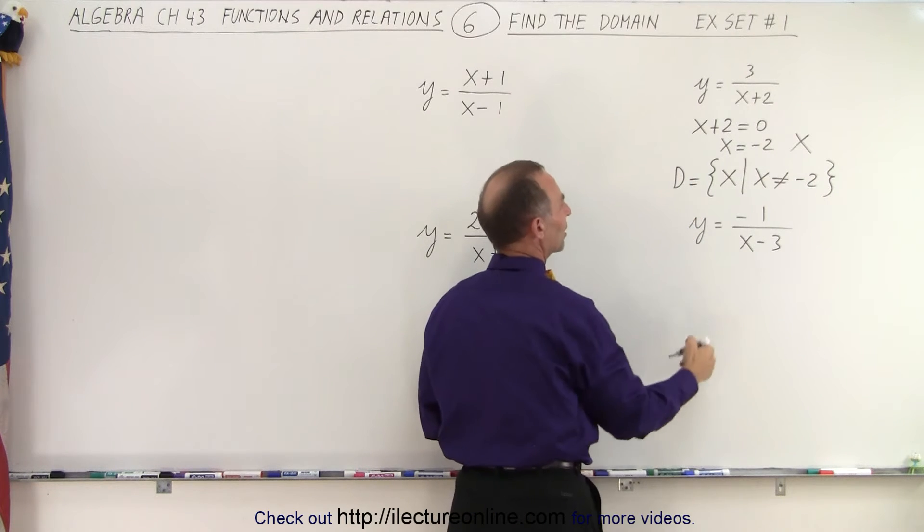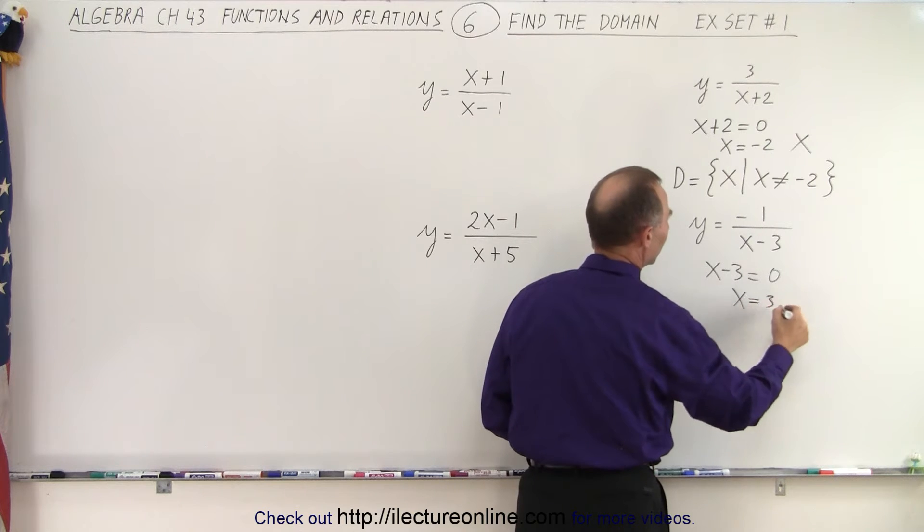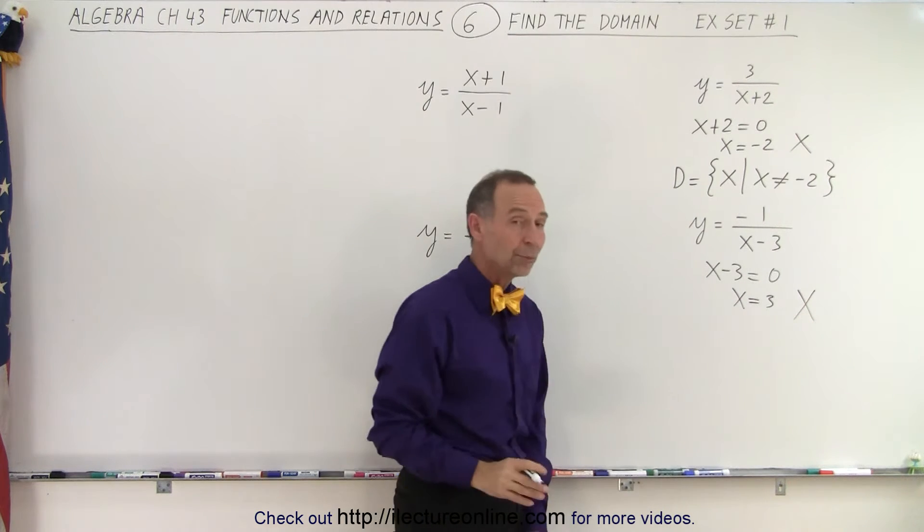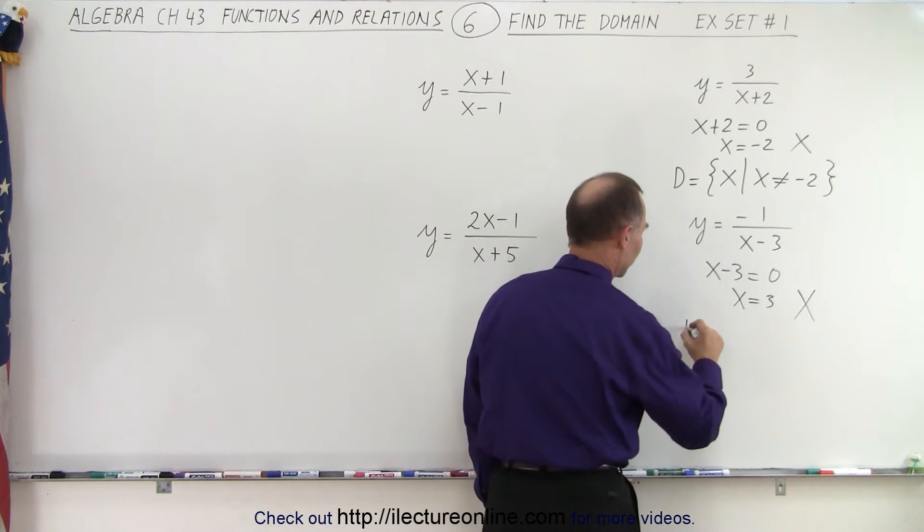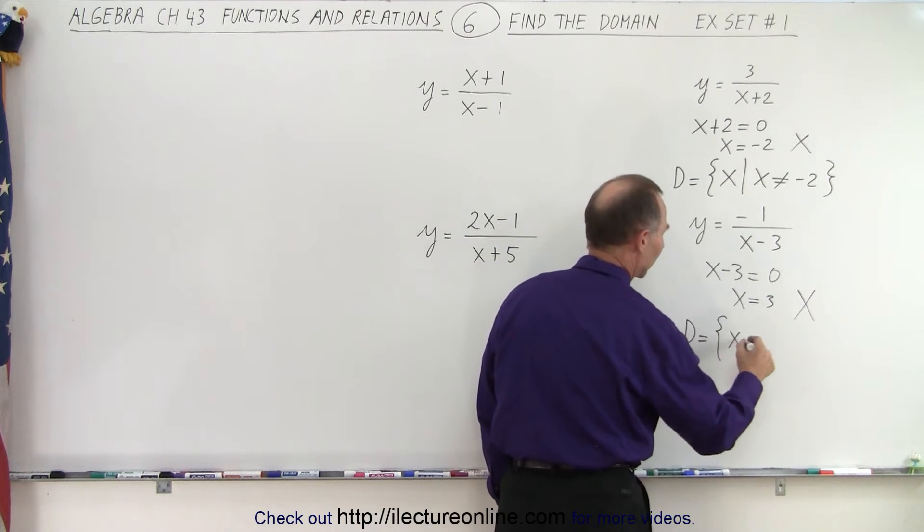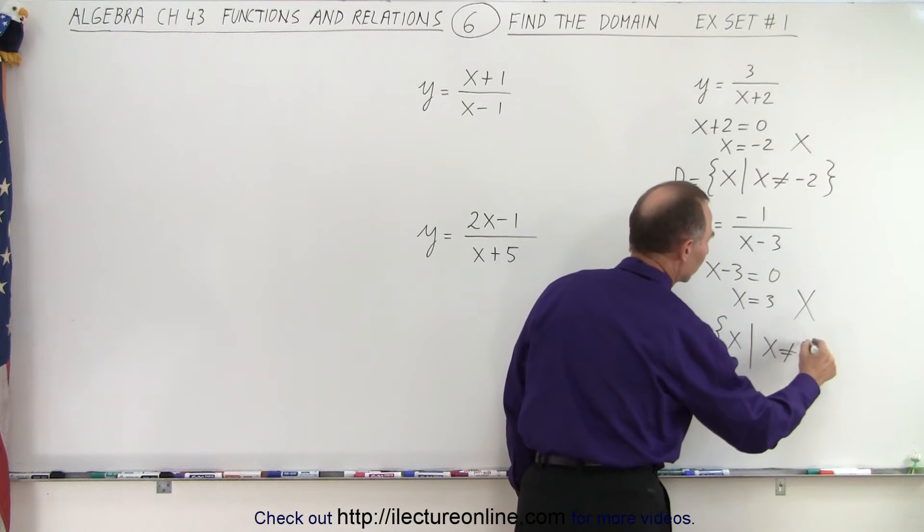We do the same over here. We set x minus three equal to zero. That means x equals three. Of course, that's a prohibitive value. We cannot have x equals three because we cannot have a zero denominator. So therefore, the domain is equal to the set of all x's such that x is not equal to three.